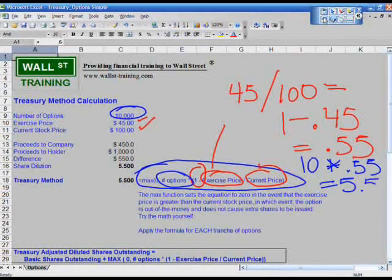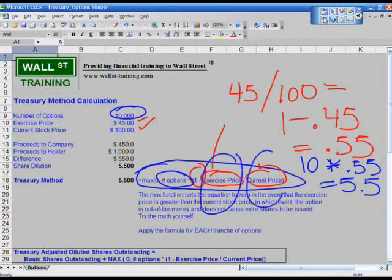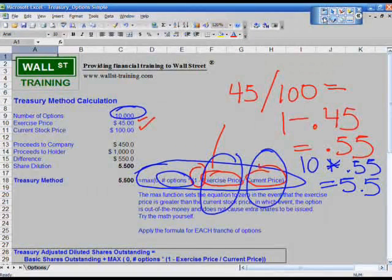That is how you would use this formula. And all you need to do is input the exercise price and input the current price. Now, that's how this formula works. The last part of this formula, why do we have this max zero?